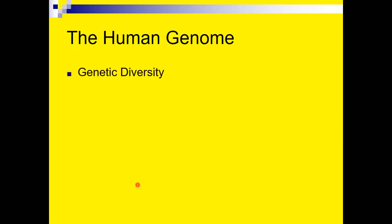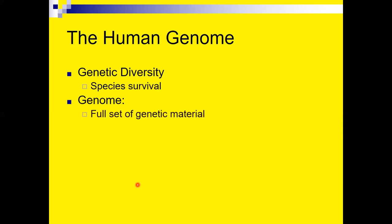The human genome includes a great deal of diversity, which may be important for the survival of our species. The genome is the full set of genetic material a person has. The genetic material is largely the same from one person to another — we have far greater similarity with all other humans than difference. That said, that half percent that can differ does account for some noticeable differences.